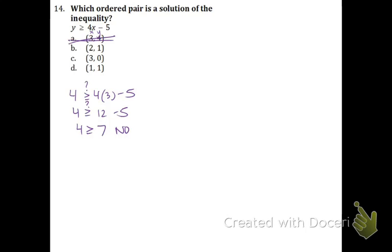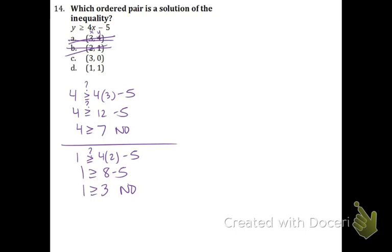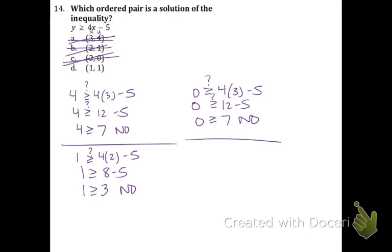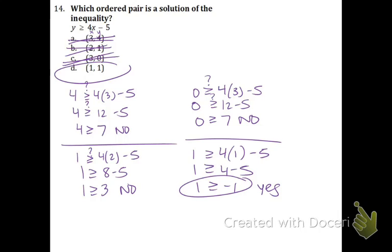Next one: 1 is going in for the y and 2 is going in for the x. 4 times 2 minus 5: 8 minus 5 is 3. 1 is greater than or equal to 3 — that's not true. Cross out b. Let's try c: 0 going in for the y and 3 going in for the x. 0 is greater than or equal to 12 minus 5, which is 7. 0 is not greater than or equal to 7 — cross that out. Obviously it's d, but just to make sure, let's plug in the 1s. 1 is greater than or equal to 4 minus 5. 1 is greater than or equal to negative 1 — yes, that is true. So 1, 1 is a solution.